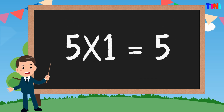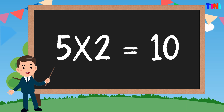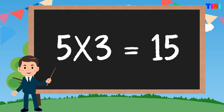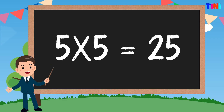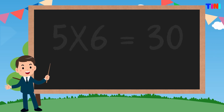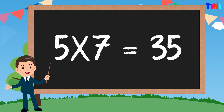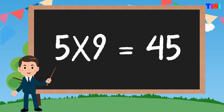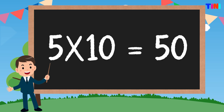Table of five. 5 ones are 5. 5 twos are 10. 5 threes are 15. 5 fours are 20. 5 fives are 25. 5 sixes are 30. 5 sevens are 35. 5 eights are 40. 5 nines are 45. 5 tens are 50.